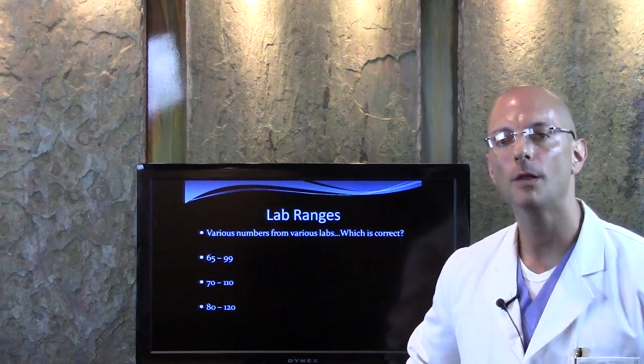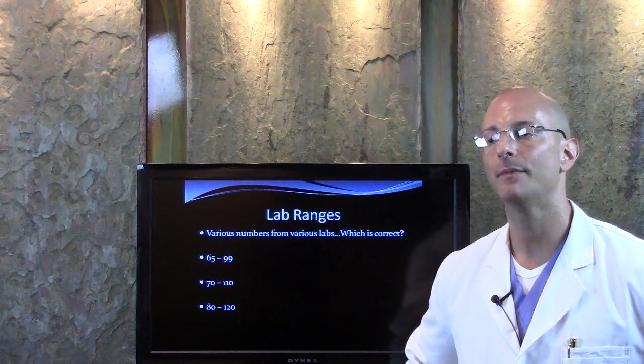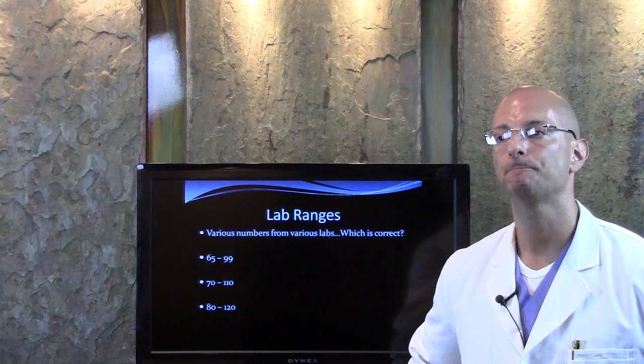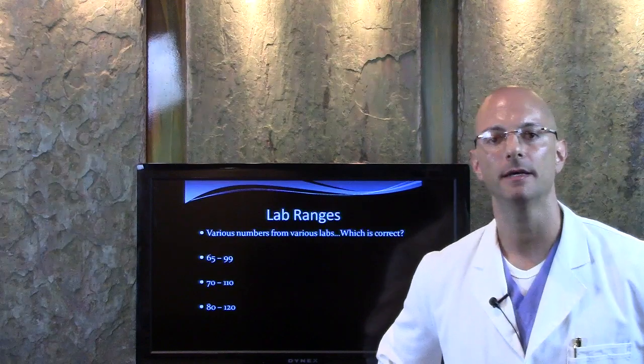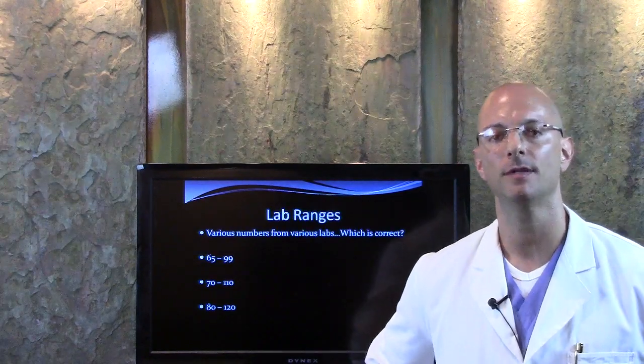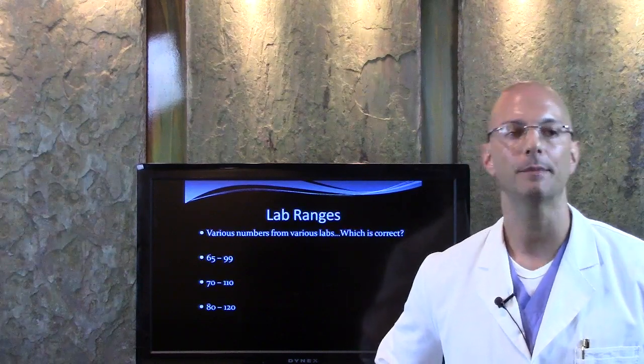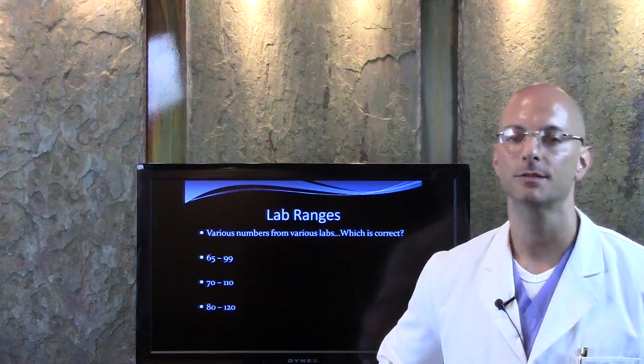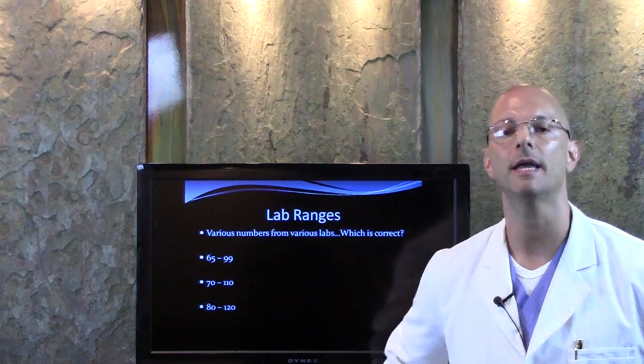They're all bell curve analysis of what they've seen in their lab. So if a lab has diabetics coming in, people on medications, people with HIV positive on medications, people who eat a lot of junk food, some people who are healthy, some people who are postmenopausal, some people with lupus, what happens when they put all those numbers together, they make a range.